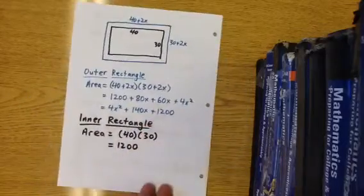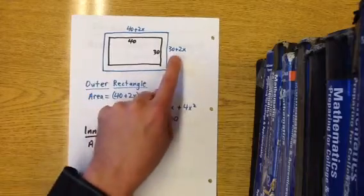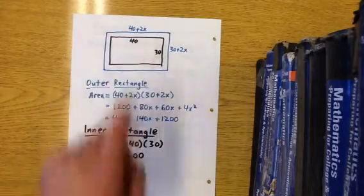So we get on with our solution with a much simpler diagram: 40 plus 2x times 30 plus 2x for the blue, and the interior one is 40 by 30.